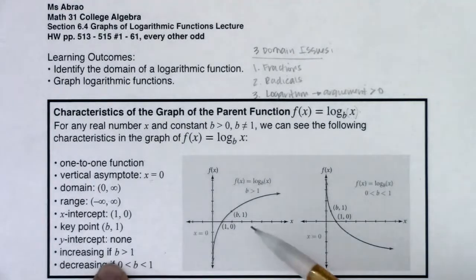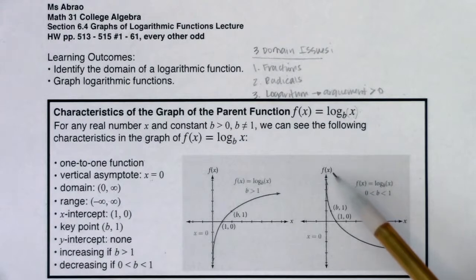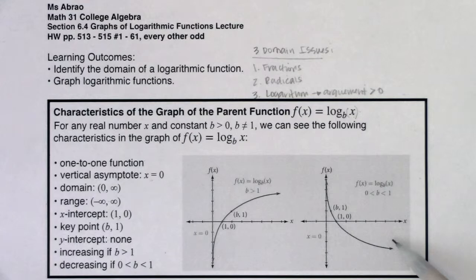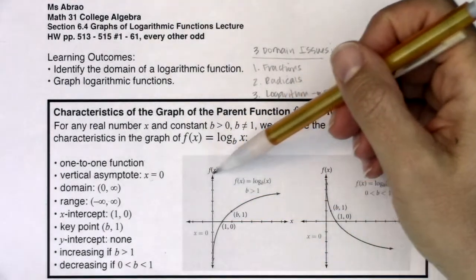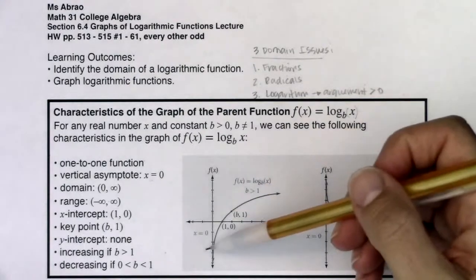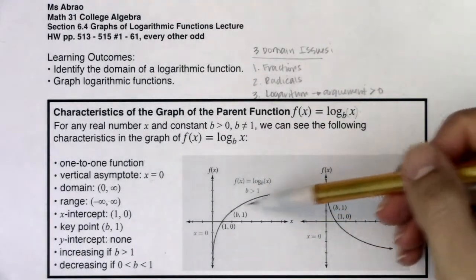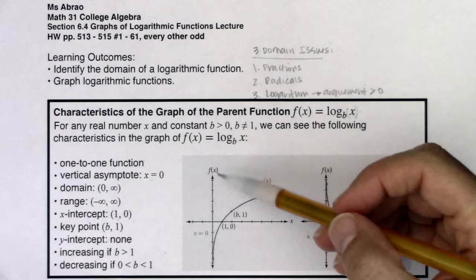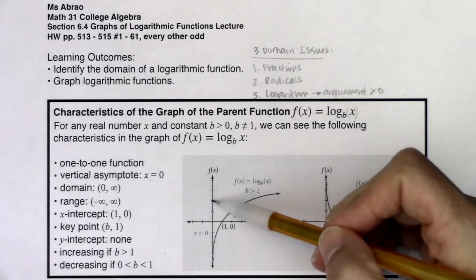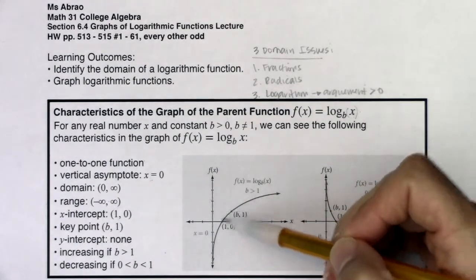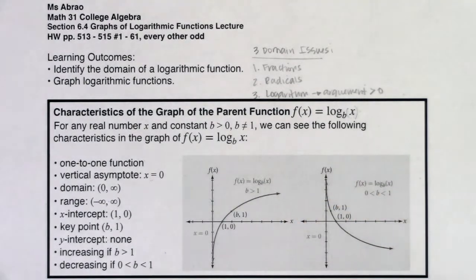You're going to have logarithmic growth if your base is greater than one, and logarithmic decay if your base is a fraction between zero and one. Logarithmic growth is growing, but at a ridiculously small rate — exponential growth grows super fast, and logarithmic growth is super slow. If you look at log base b of x and b to the x, they're inverse functions — reflections over the line y equals x.